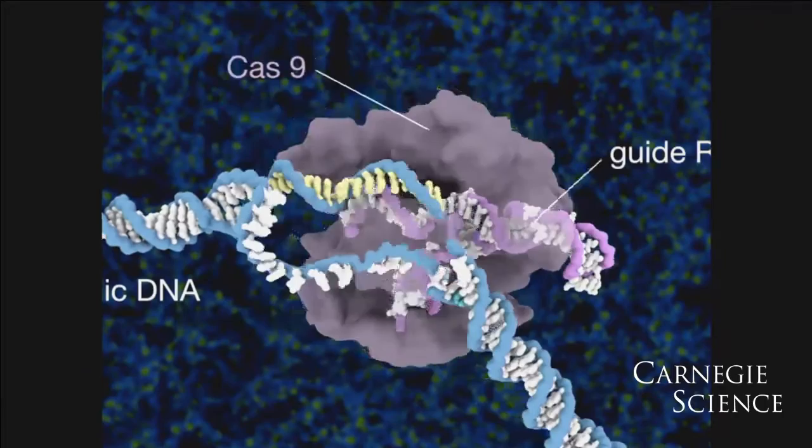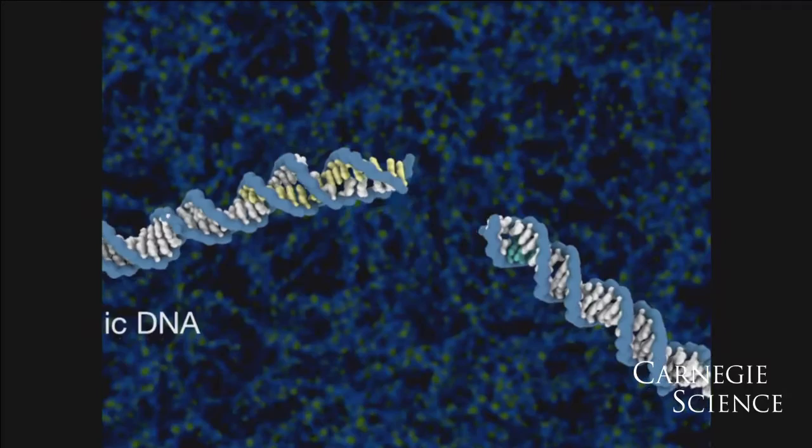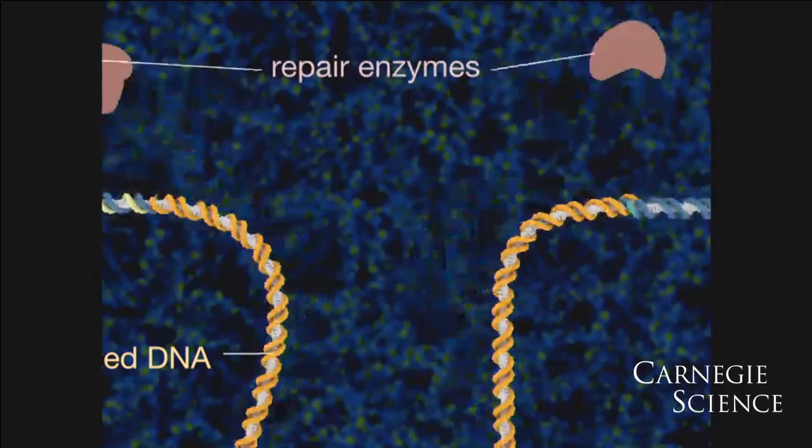Then it hands off the cleaved ends of the DNA molecule to repair machinery, repair enzymes in the cell that can fix the break. In that example, they actually insert a new piece of DNA at the site where the break originally occurred.